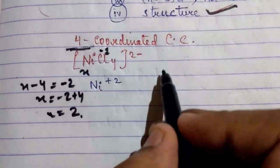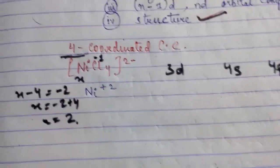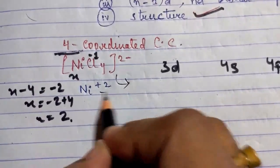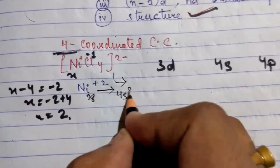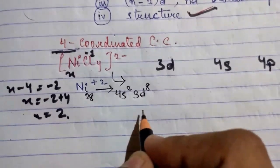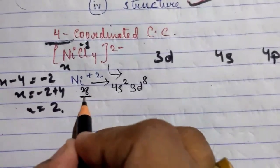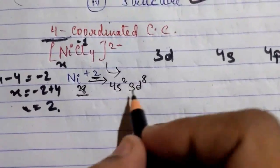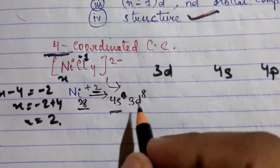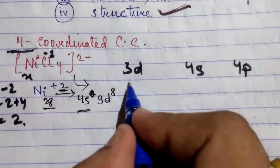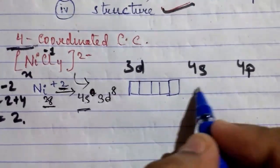Now we are going to look at the orbital diagram. The orbitals are 3d, 4s, and 4p. For NiCl₄²⁻, the electronic configuration of Ni²⁺: Ni has atomic number 28, so its configuration is 3d⁸. There are 5 orbitals in 3d, and 1 orbital for 4s.